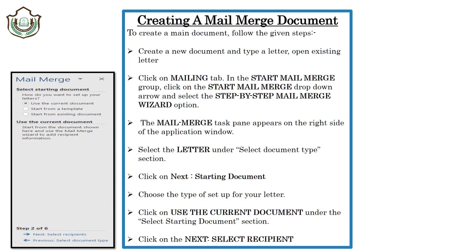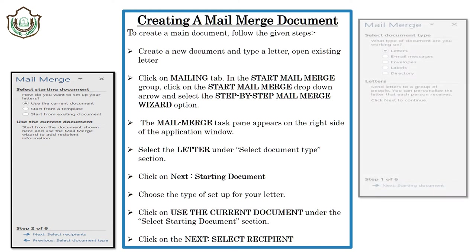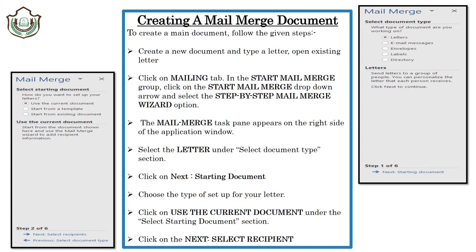The Mail Merge task pane appears on the right side of the application window. Select the letter under Select Document Type, then click on Next: Starting Document, and choose the type of setup for your letter. Then click on Use Current Document and then Next: Select Recipients.